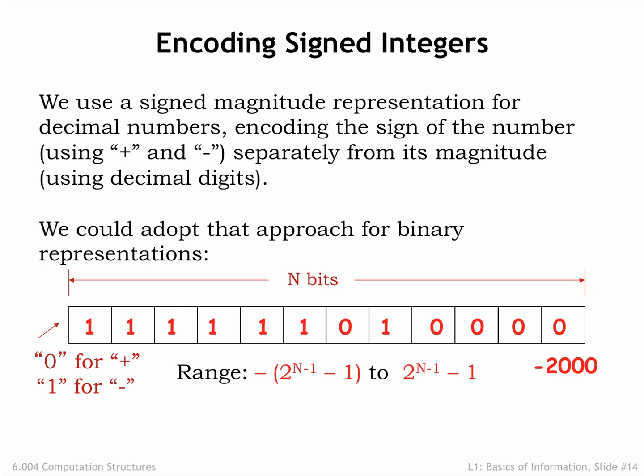We could adopt a similar notation, called signed magnitude, in binary by allocating a separate bit at the front of the binary string to indicate the sign, say 0 for positive numbers and 1 for negative numbers.